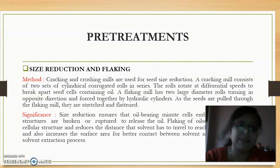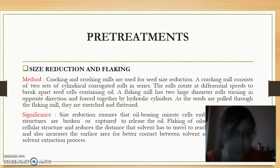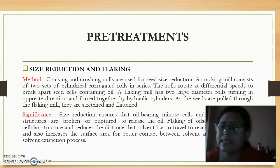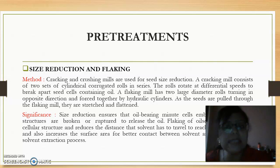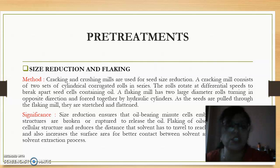The next step is size reduction and flaking. Size reduction is done in crushing mills and flaking is done in flaking mills. Size reduction is done to rupture the oil-bearing cells, facilitating oil extraction. Flaking is mainly done for oil seeds which are subjected to solvent extraction, because this increases the surface area in contact with the solvent and also decreases the depth through which the solvent has to travel to extract the oil.